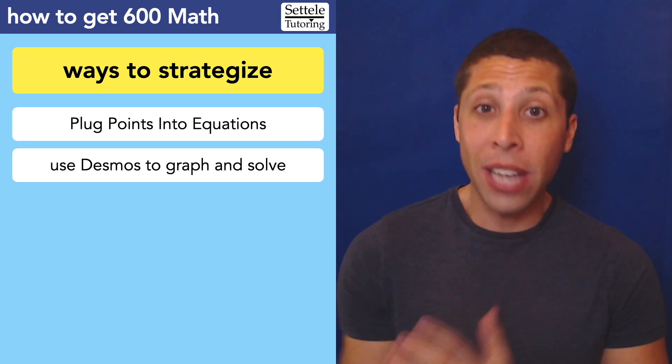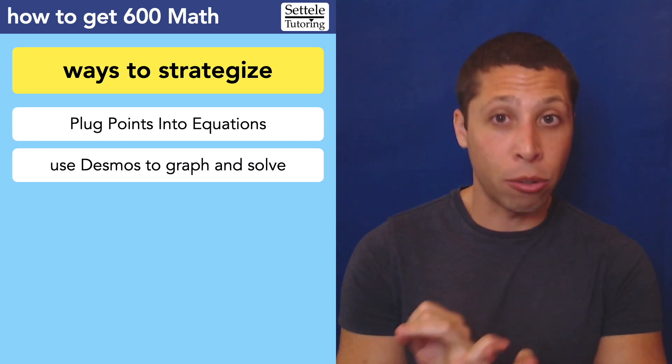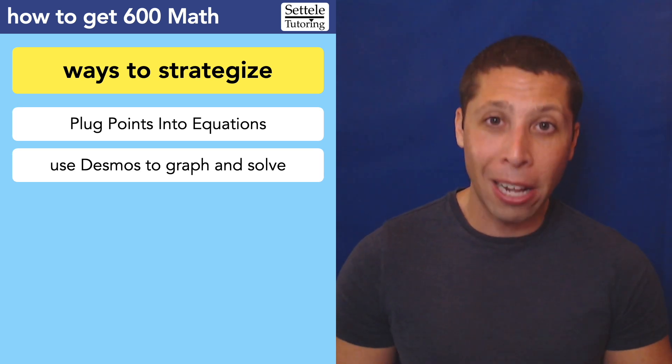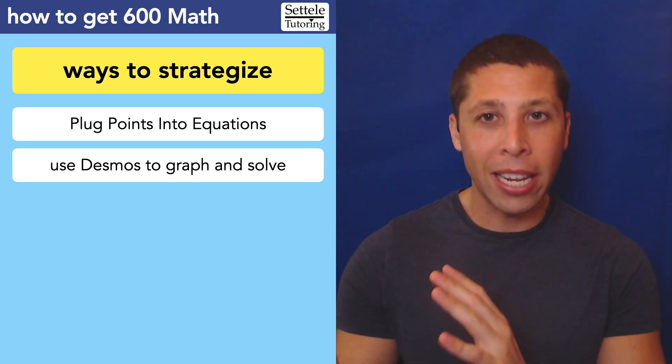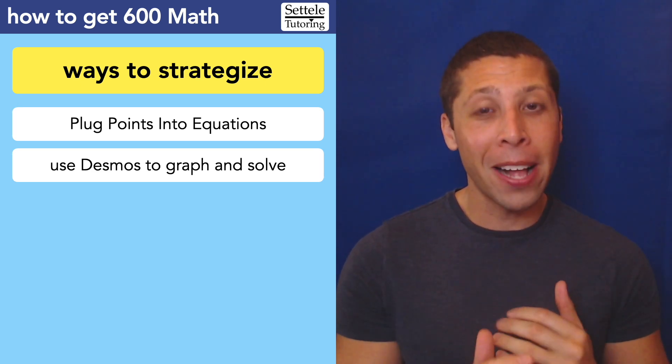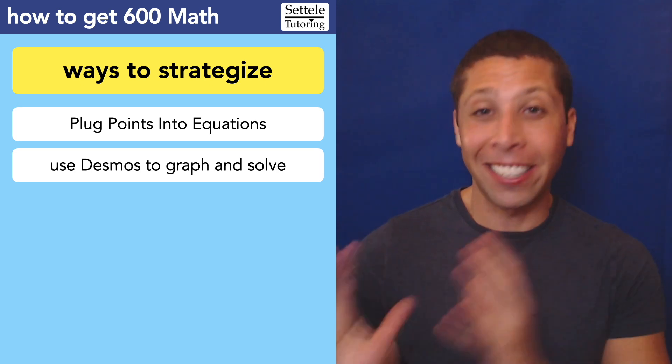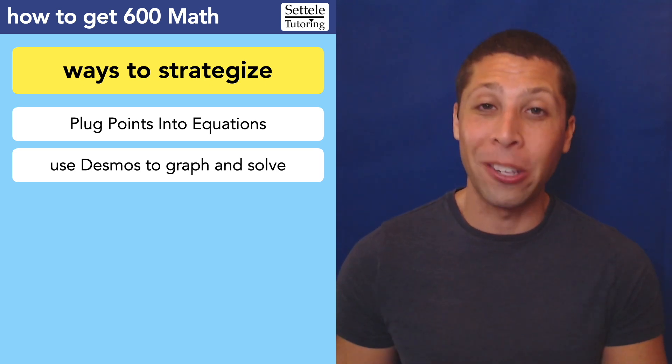Also, learn how to use DESMOS, the built-in graphing calculator. You can use it obviously to graph things like you would a regular graphing calculator, but it also helps you solve algebra. I have a lesson on this. It's really helpful, especially if you're not that great at algebra. You might be able to get yourself over the finish line to that 600 just by letting the calculator do a lot of the work for you. So, make sure you learn how to use it. It's a very powerful tool.